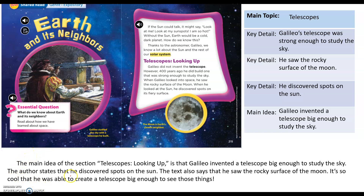Here's the paragraph I wrote. 'The main idea of the section Telescopes Looking Up is that Galileo invented a telescope big enough to study the sky.' You can see first I restated the question, and then I answered the question.